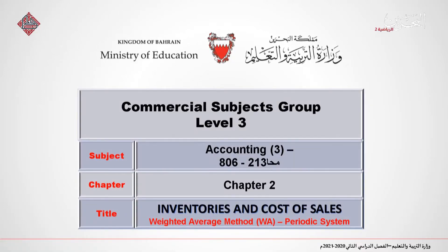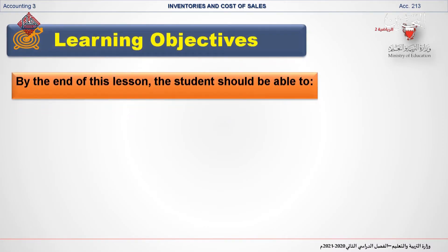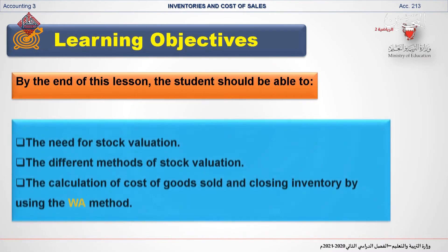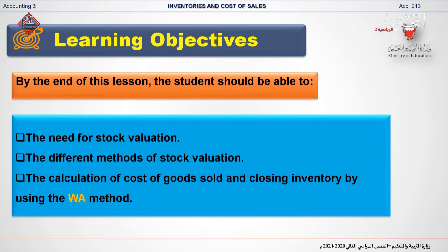Dear students, welcome to commercial subjects group, level 3, accounting 2 and 3, chapter 2. Today we will explain inventories and cost of sales, the weighted average method, periodic system. By the end of this lesson you should be able to know the need for stock valuation, the different methods of stock valuation, and the calculation of cost of goods sold and closing inventory using the weighted average method.